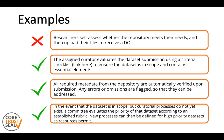Another idea to include is something along the lines of: in the event that the data set is in scope but curatorial processes do not yet exist — meaning it might fit the domain or be deemed relevant for the repository to hold, but it's a new, more experimental and novel type of data — then there might be a committee that evaluates the priority of that data set according to an established rubric, and new processes can be defined for high-priority data sets as resources permit.